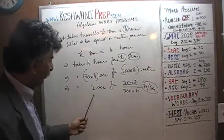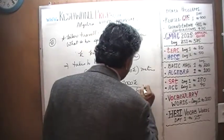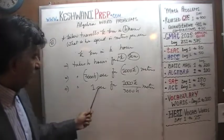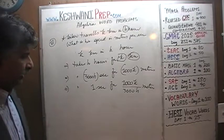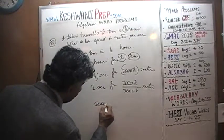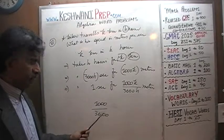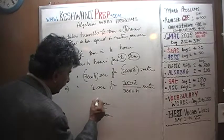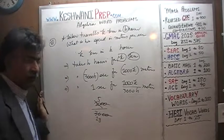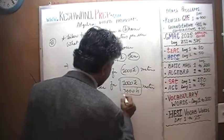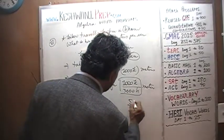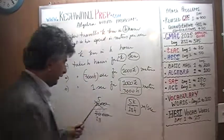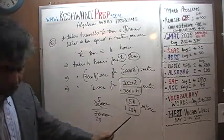He travels 1000k over 3600h meters in one second — that is his speed. We just have to simplify it. Dividing top and bottom by 100 removes two zeros. Then dividing top and bottom by 2 gives us 5 over 18. So the final answer is 5k over 18h meters per second.